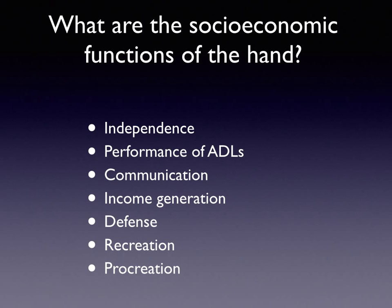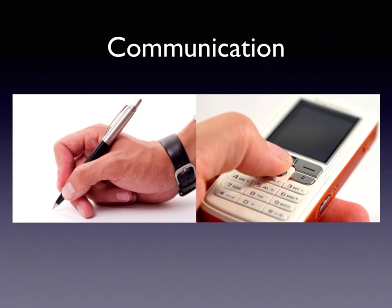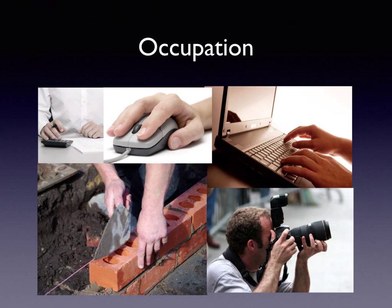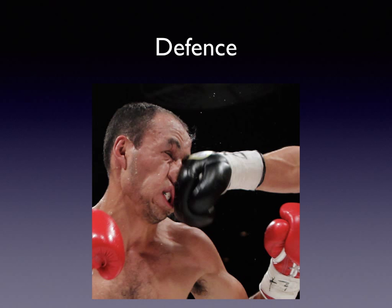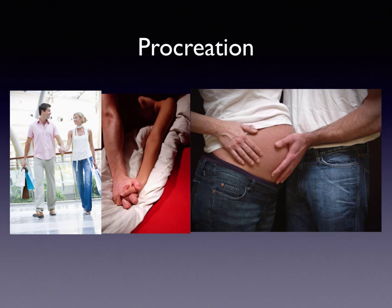What are the socio-economic functions of a hand? A hand is what makes us independent as humans — it allows us to perform our activities of daily living, communicate, generate an income, defend ourselves, and undertake recreational pursuits; it's also involved in procreation. So we use it for feeding, communication both in the historic and modern electronic sense, undertaking our job, physical defence, recreational pursuits, and of course human interaction, loving relationships and procreation.